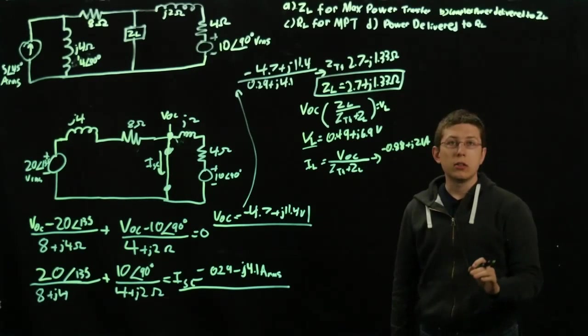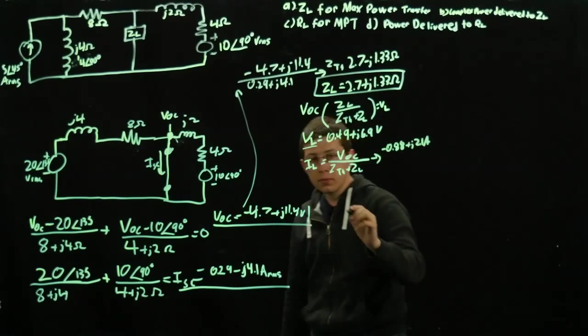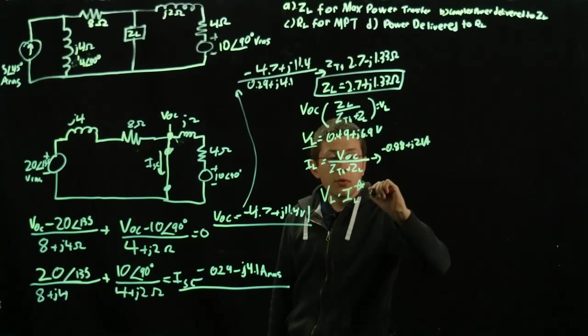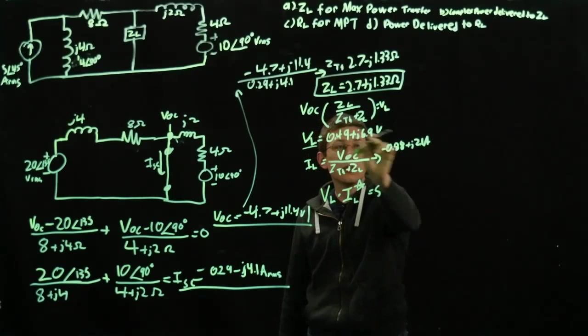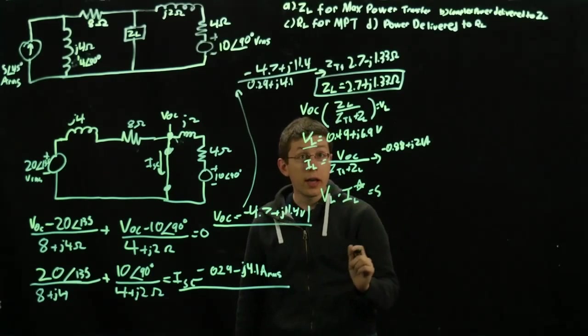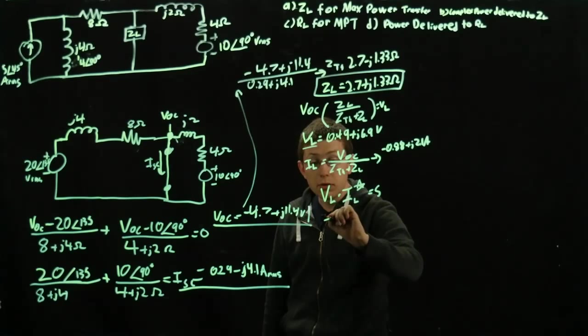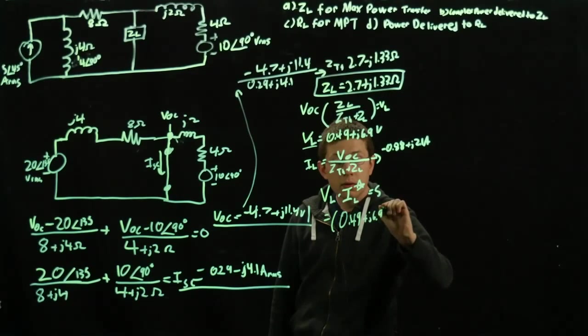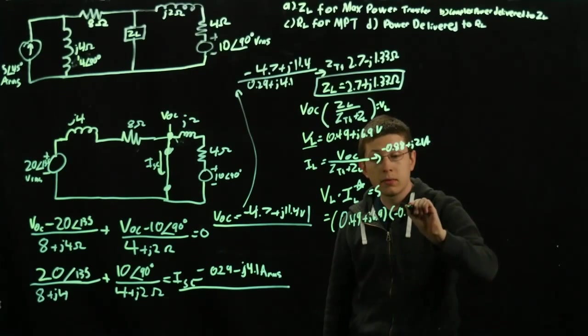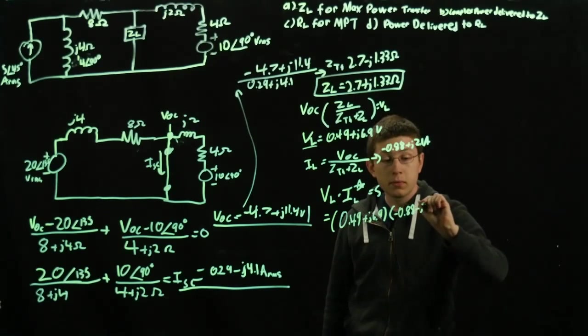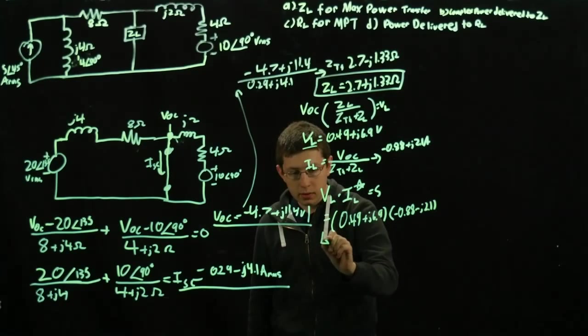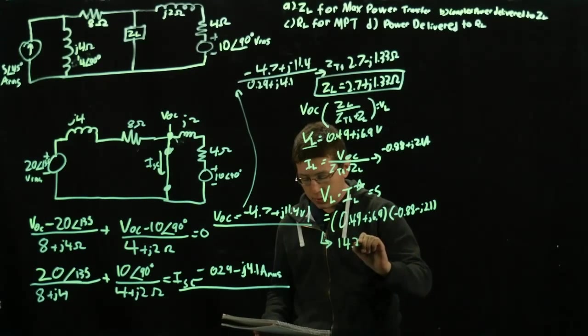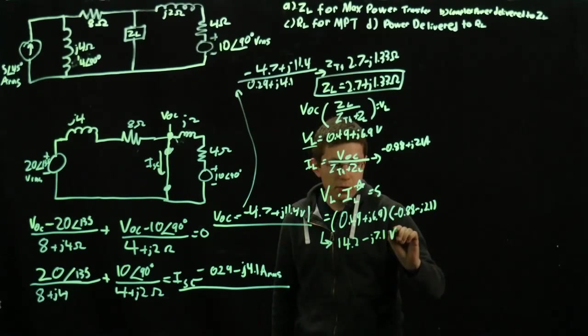Now we've found all that we need for our complex power. Our complex power is VL times IL conjugate. The IL conjugate is very important. So all we have to do is multiply this by this, making sure to flip the sign of our imaginary part. This equals 0.49 plus J6.9 times negative 0.88 minus J2.1. The minus is very important or else you will get the wrong answer. As a result, our complex power is 14.2 minus J7.1 volt amperes.